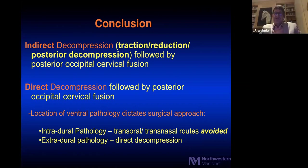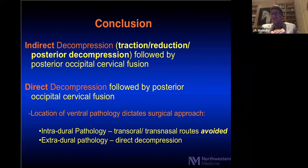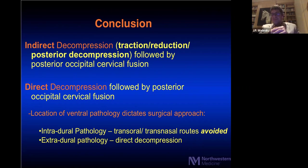In conclusion: you need to understand the pathology and determine whether indirect decompression is sufficient — traction reduction or posterior decompression with posterior occipital-cervical or C1-C2 fusion — or whether a more aggressive direct decompression followed by posterior fusion is needed. The location of pathology dictates approach: intradural ventral lesions should not be approached transorally or transnasally — try posteriorly — while extradural pathology can be addressed by direct decompression via endonasal, transoral, transmandibular, or endoscopic transcervical approaches.